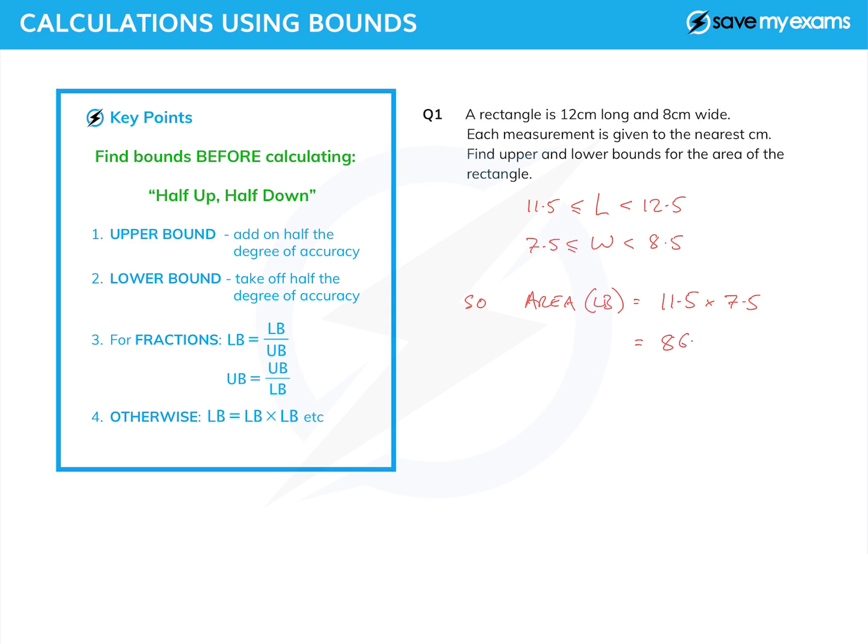And the upper bound for the area—well I just multiply the two upper bounds together. So that's 12.5 times 8.5, which turns out to be 106.25.